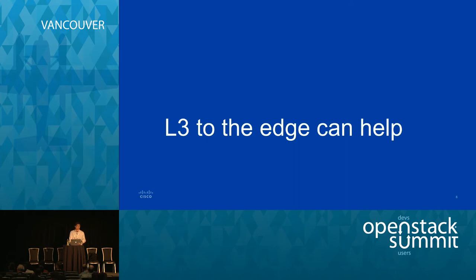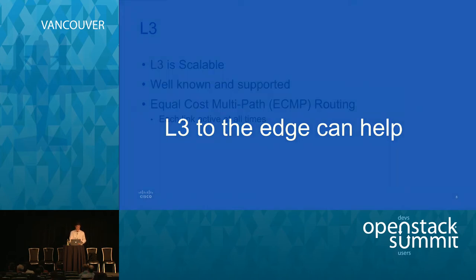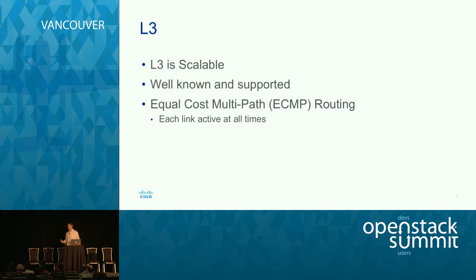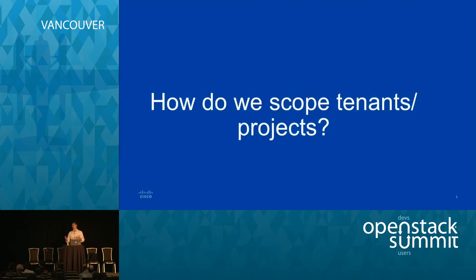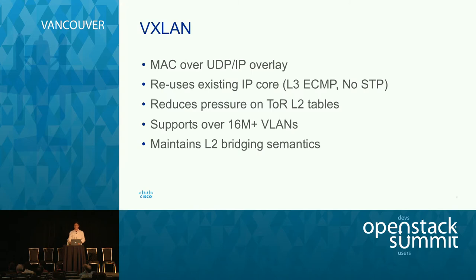Pushing L3 all the way to the edge can help with this. L3 is scalable, well known, and has been around for a long time. It has equal-cost multi-path routing, so you can have all of your links active and maximize link utilization. The challenge is we still need to scope our tenants and projects — how do we scope networks within this L3 network? That's where VXLAN and other IP overlay networks come into play.